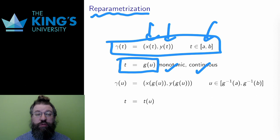Then I will replace t with g of u to get a new curve gamma of u. This curve will go through exactly the same coordinates, but with a different rate determined by the function u. And the domain also changes to match the new variable.